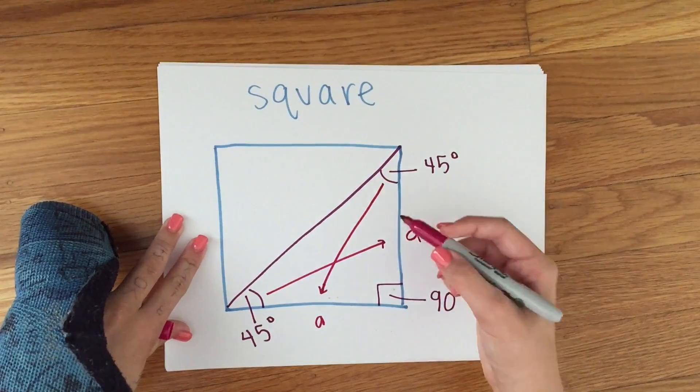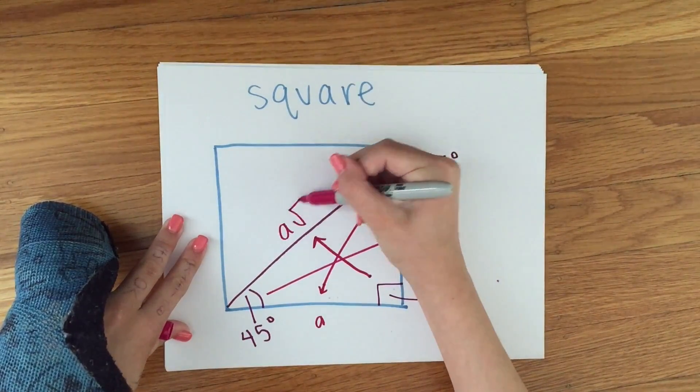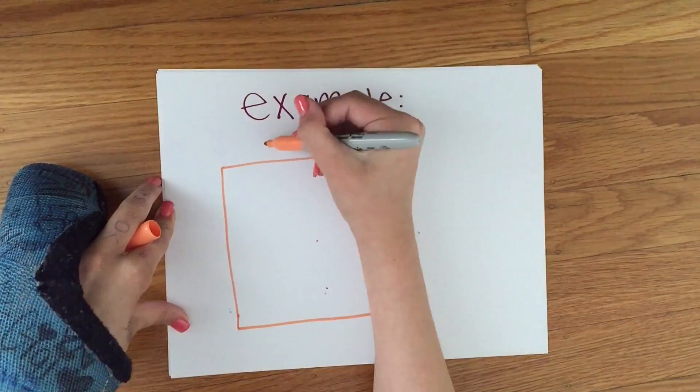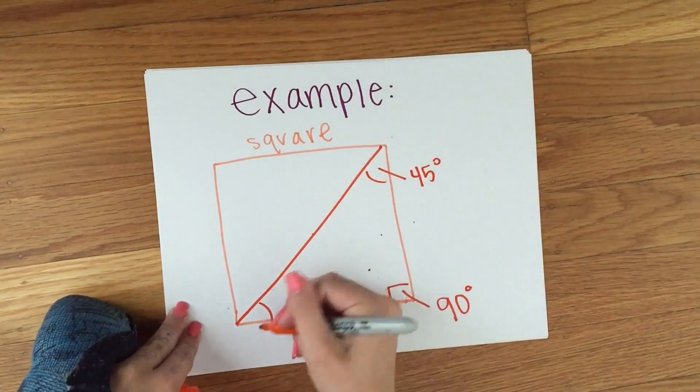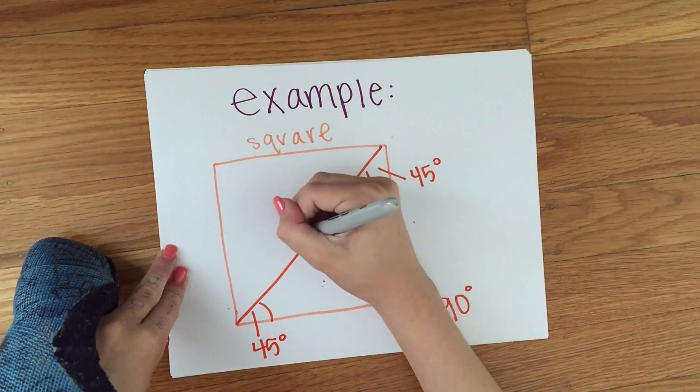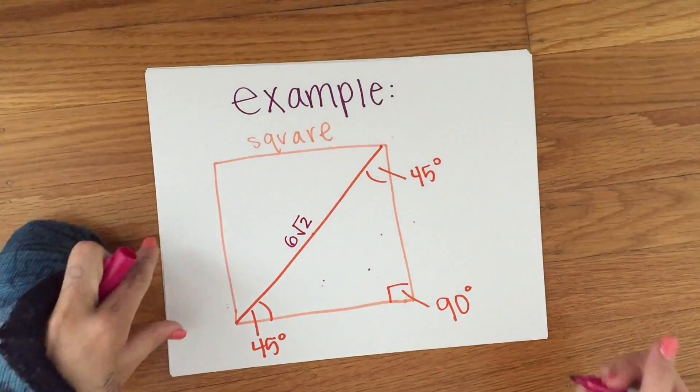Using this, you know the measures of each side. Here's an example problem. In this problem, the hypotenuse equals 6 root 2.